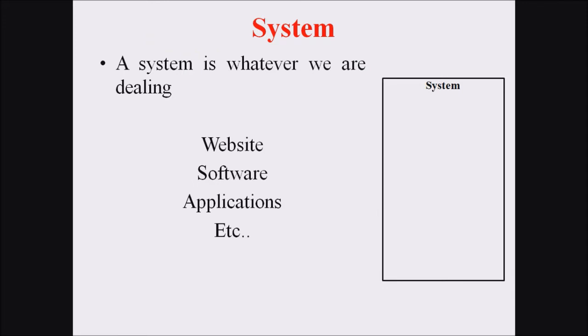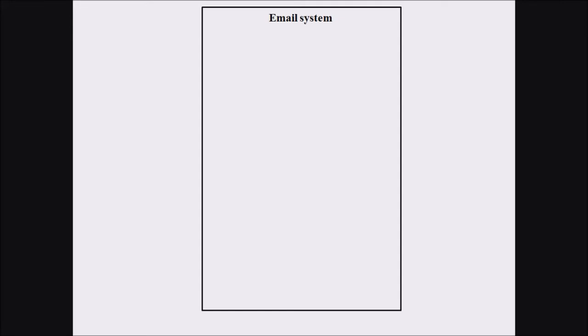Now we consider each factor in a use case diagram. First, the term 'system': a system is whatever we are dealing with — it can be a website, software, application, or any program. The system is represented with a rectangle with the system name in the topmost corner. For example, our email system is represented within a rectangle with the name 'email system'.